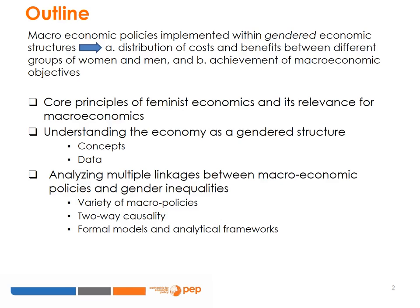This fact has two important implications. It has implications for the distribution of costs and benefits between women and men, as well as between different groups of women and men, depending, for example, on their stage in the life cycle, ethnicity and place of residence. It also has implications for achieving macroeconomic objectives.